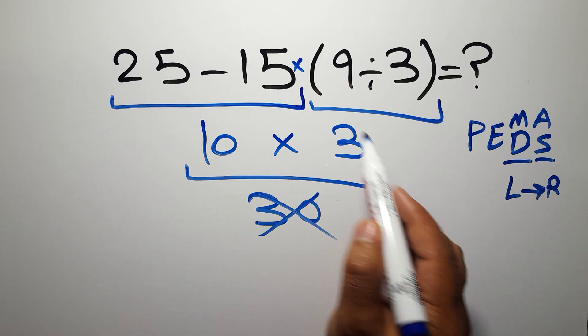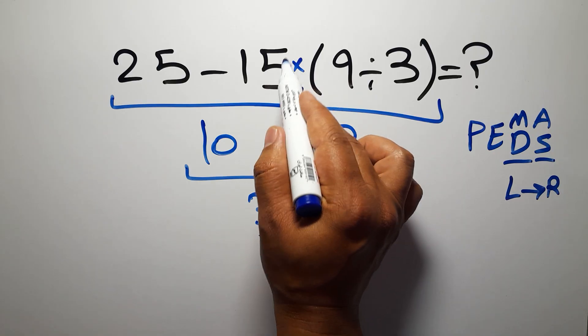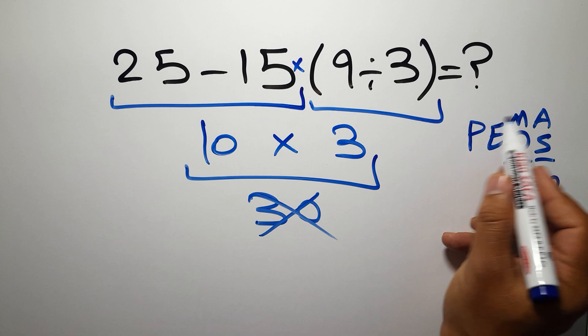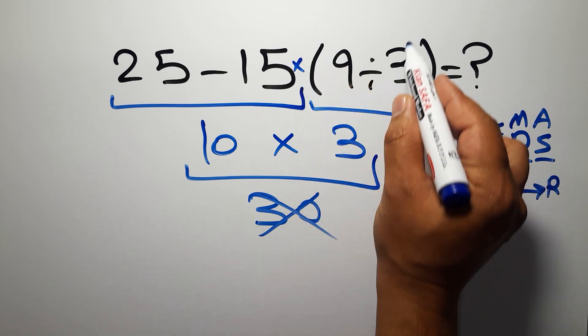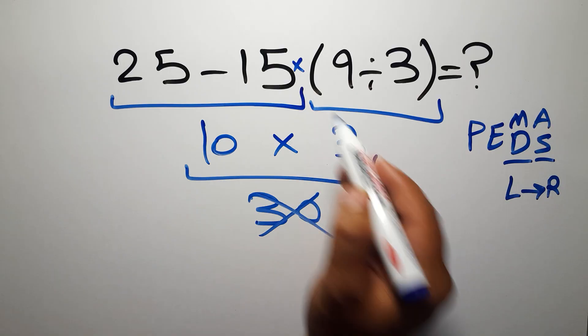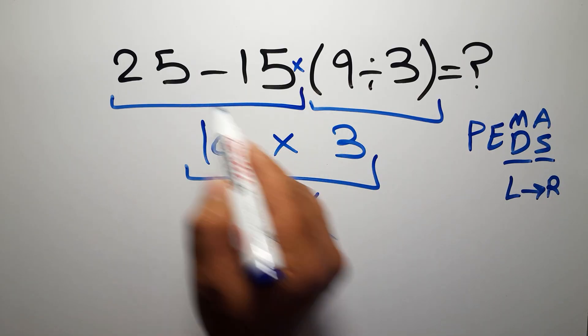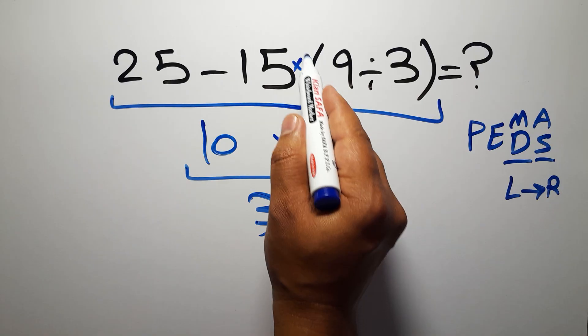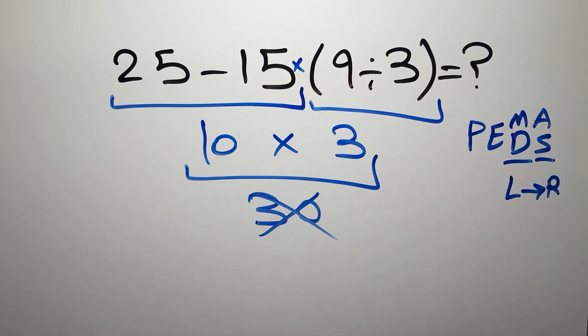We usually don't write the multiplication sign for brevity. According to PEMDAS, first we have to do this parentheses, then this multiplication, and finally this subtraction. If you do this subtraction before this multiplication and this parentheses, it is wrong.